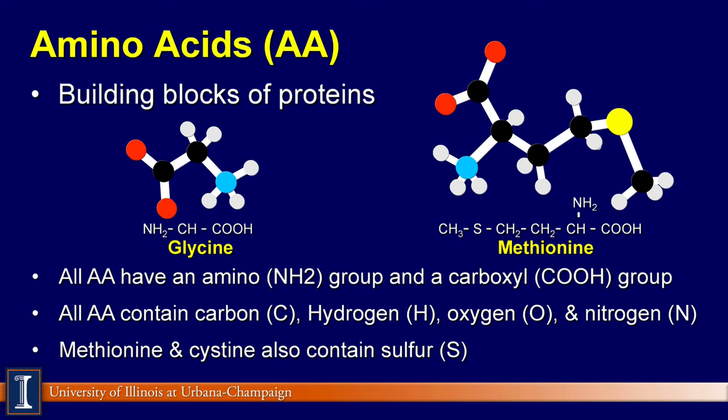There are 20 amino acids that make up all proteins. The simplest amino acid is glycine, but the amino acid most often referred to as being deficient in the diet of lactating dairy cows is methionine. The chemical structures of glycine and methionine are shown in this figure. Other amino acids have different chemical structures.